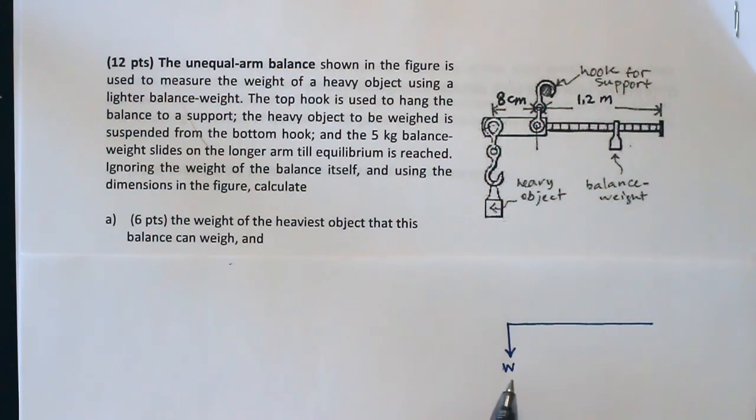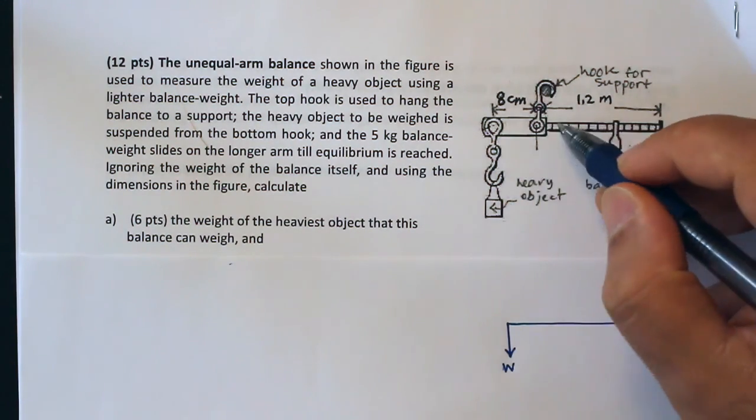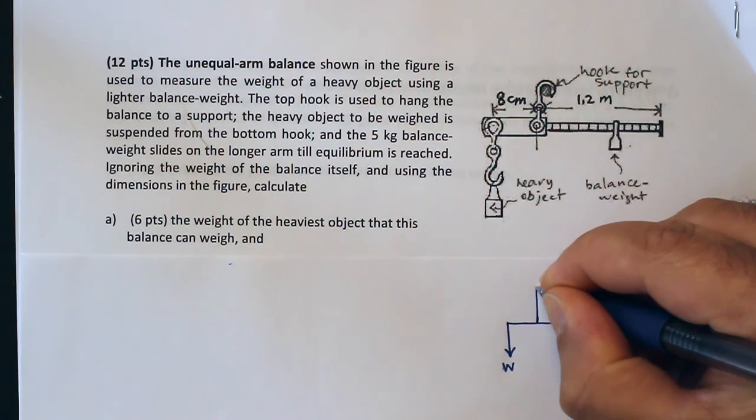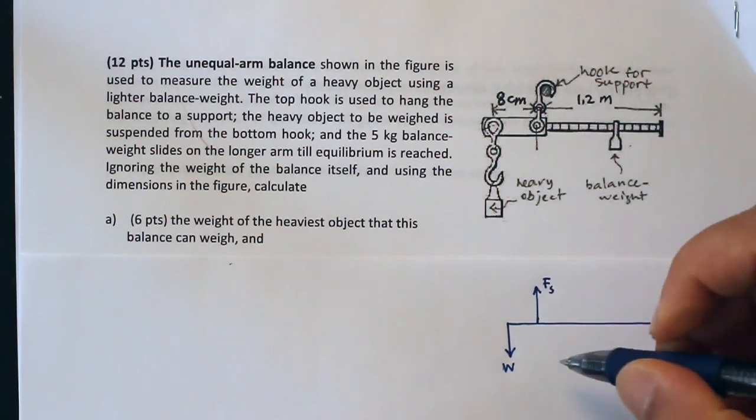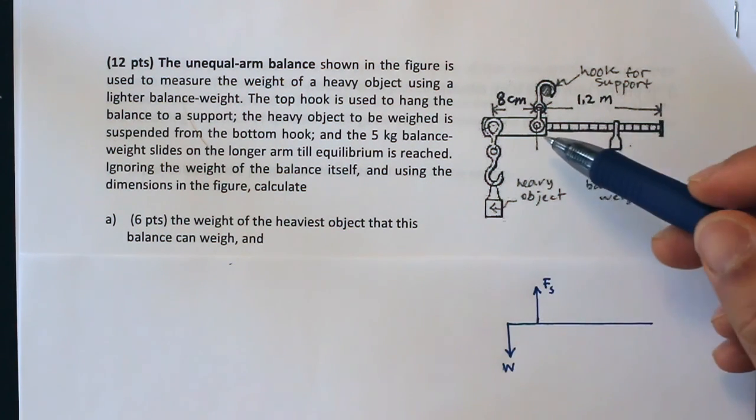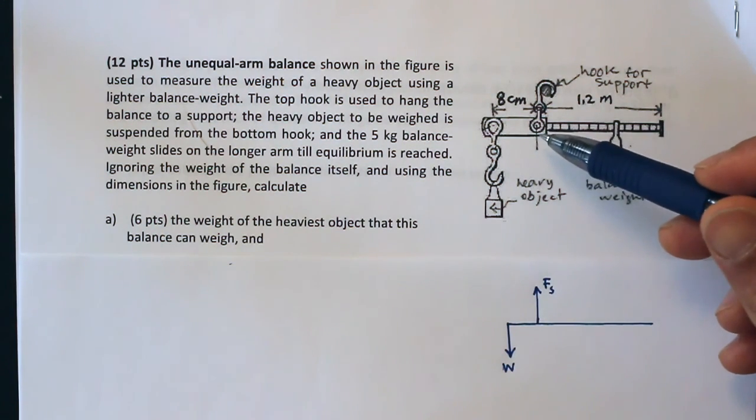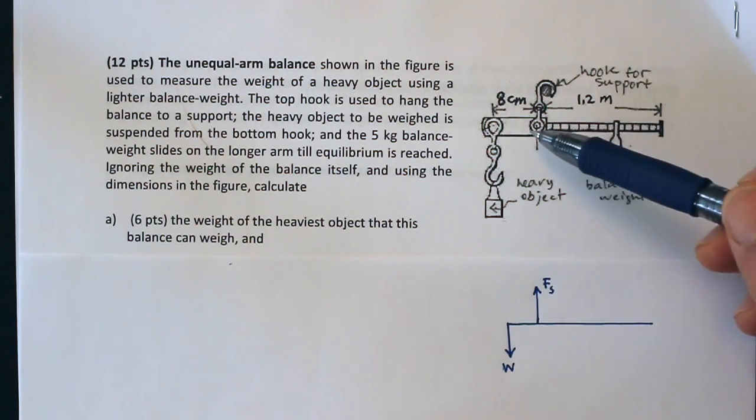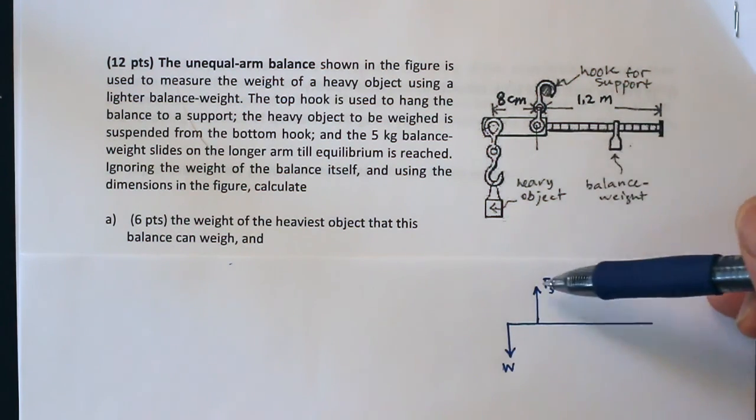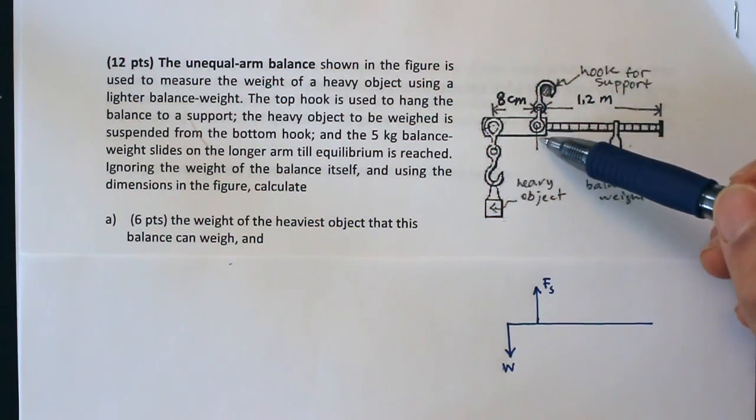And then eight centimeters away there's the support, and I'm going to assume that the force due to the support is actually acting upwards on the balance. I think this is a good assumption, but I don't have to be married to it. If it turns out that the force is negative, then that means that it's pointing down.